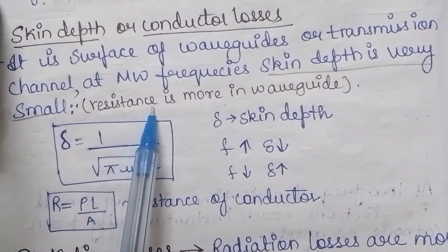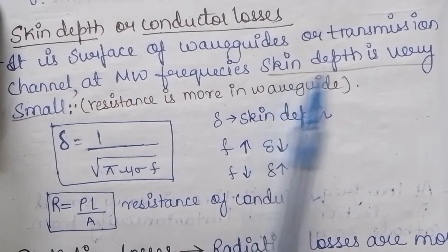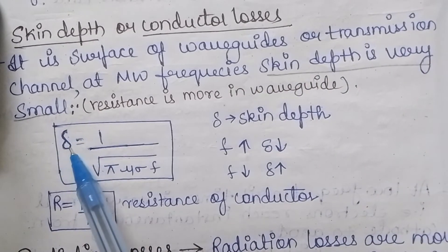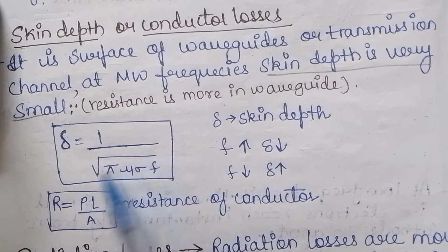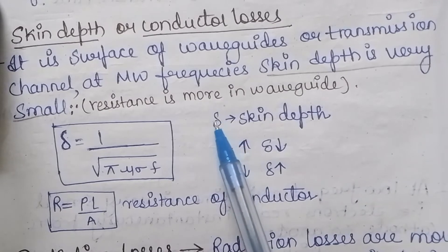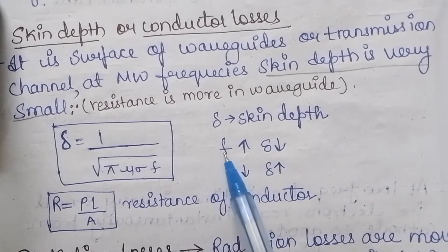Now skin depth can be represented by this symbol delta, which is equal to one upon under root pi mu sigma f, where this delta is the skin depth and f is the frequency.